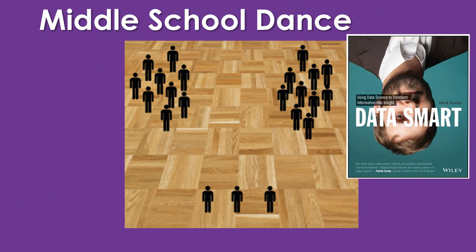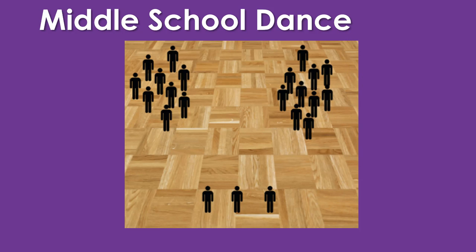I'm going to use an example from a great book, Data Smart by John Foreman, and it's about a middle school dance. We can all remember those dances where kids filed into the gymnasium and separated into groups — usually boys on one side, girls on one side, and the counselors, monitors, and teachers on the other side. It's a simplistic model, but we can use it to learn about k-means cluster analysis.